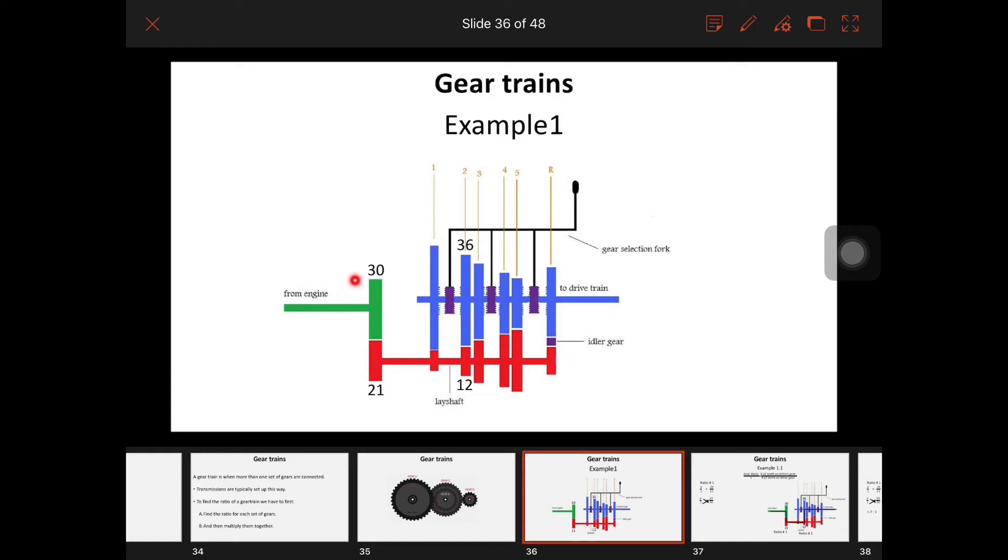If you look at this, we have a drive and a driven. Our drive is 30 teeth and our driven is 21. Then on this one, this is now our drive, the 12 tooth gear, and our driven is 36. So we have two different gear ratios. We have to solve for each one of those to find the gear ratio for this set of gears and then the gear ratio for this set of gears. Then we multiply those together to get our answer.